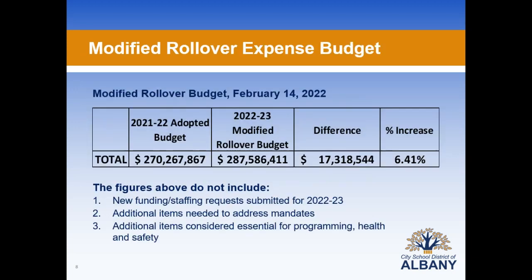That brings our modified rollover expense budget to $287,586,411, which is a difference of $17.3 million or 6.4%. These figures do not include funding of any new staffing requests submitted for 22-23, any additional items that may address mandates, or additional items considered essential to programming, health, and safety.